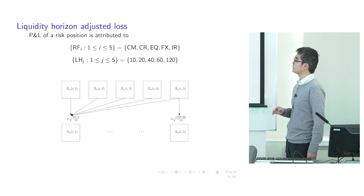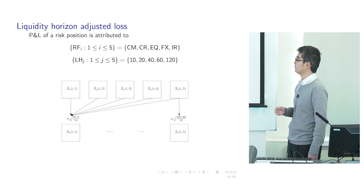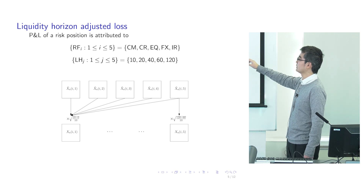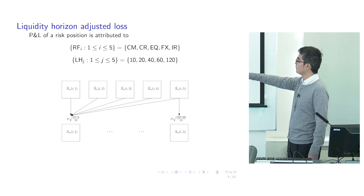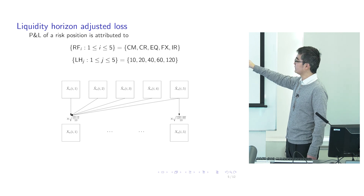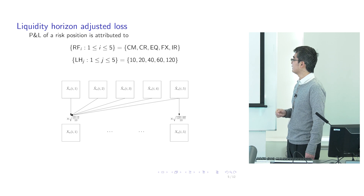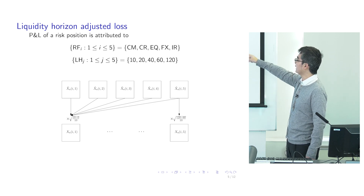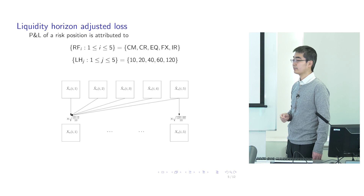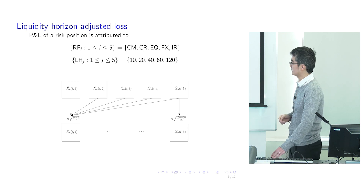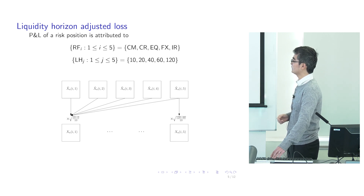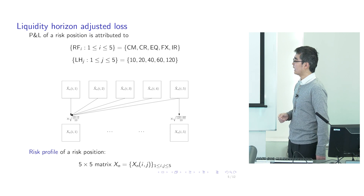The first step is to adjust according to the liquidity horizon. For the unadjusted profit and loss allocated to each bucket, we first need to aggregate them according to the following rule. The shortest liquidity horizon bucket will have contribution from five buckets, each multiplied with a scaling factor. The longest liquidity horizon bucket will only have contribution from one liquidity horizon bucket, but the scaling factor is much larger. After the liquidity horizon adjustment, we have the risk liquidity horizon adjusted profit and loss, represented by a five-by-five matrix which we call the risk profile.